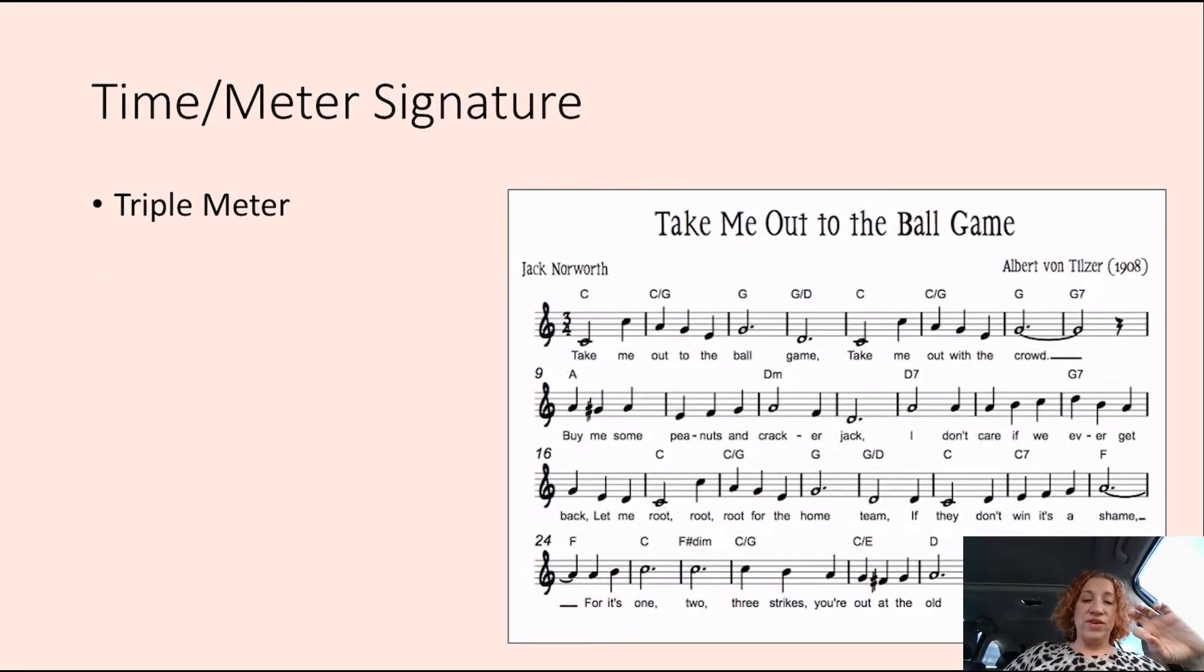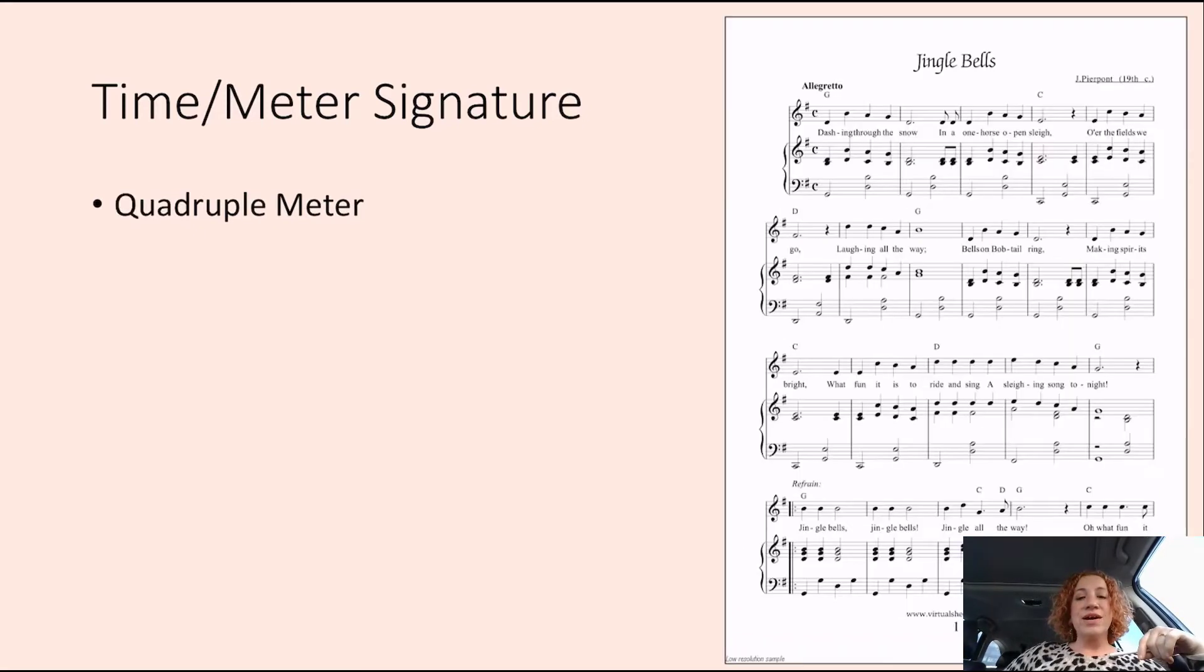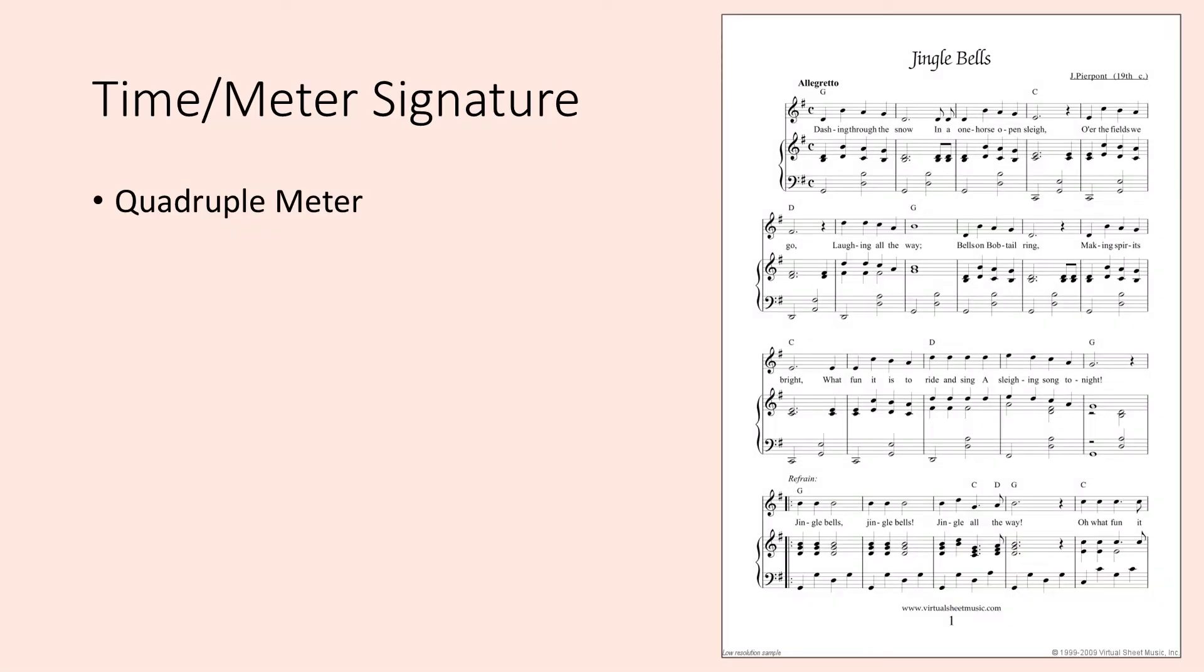All right, so this is more of that waltz feeling. So if we clap harder every fourth beat, then we are in quadruple meter. So pretty popular song. Let's listen to this. Jingle, bounce, jingle, jingle, bounce, bounce. Jingle, jingle all the way. Oh, what fun it is to ride in a one-horse open sleigh. Hear them bounce, them jingling, bounce. Jingle, jingling all the way. Oh, what fun it is to ride in a one-horse open sleigh.